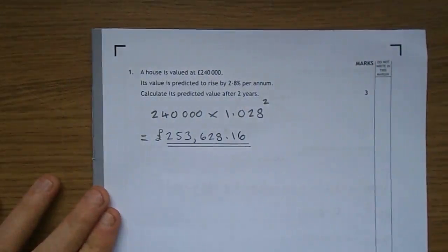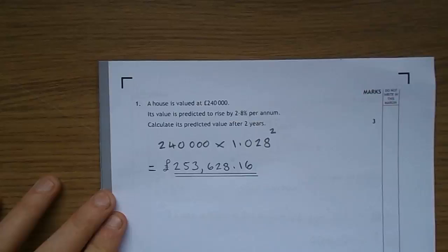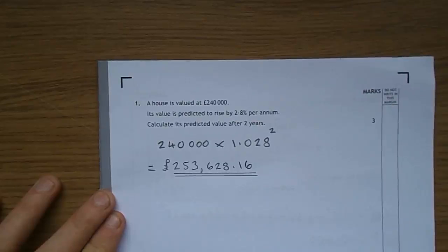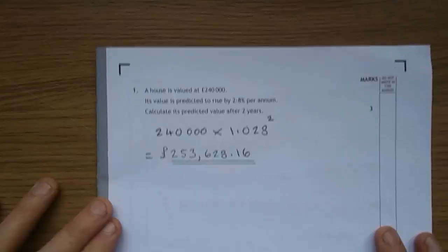Okay, question 1. This is the calculator paper. House is valued at 240,000, its value is predicted to rise by 2.8% per year, per annum. Calculate its predicted value after 2 years.